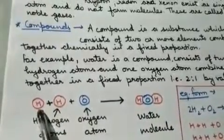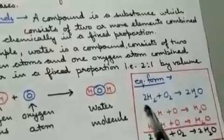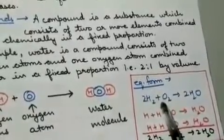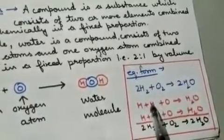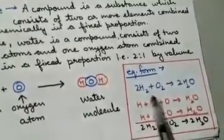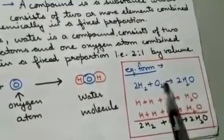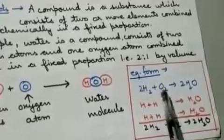In this diagram, you can see one atom of hydrogen, another atom of hydrogen, and one atom of oxygen. When these atoms combine, they form a molecule of water — H₂O. In equation form: 2H₂ + O₂ → 2H₂O, meaning two molecules of hydrogen react with one molecule of oxygen to form two molecules of water. This is a balanced equation. Hydrogen and oxygen are written in their diatomic molecular forms: H₂ is the diatomic molecule of hydrogen, O₂ is the diatomic molecule of oxygen, and together they form the water molecule.